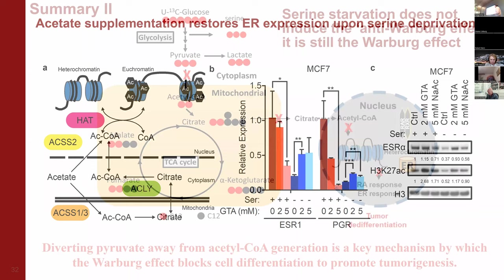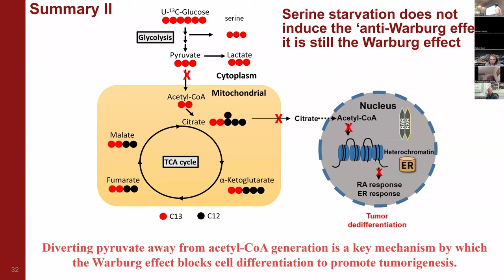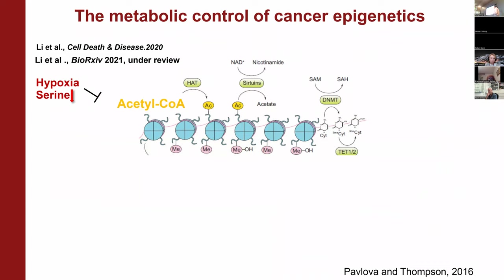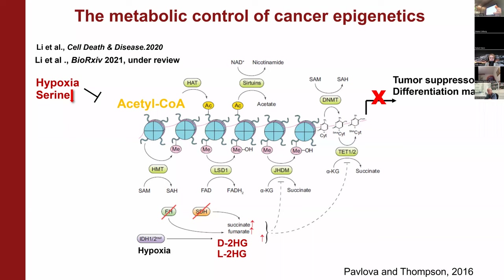To summarize the second part: although under serine starvation the cells generate less lactate, intrinsically it is still the Warburg Effect — still silencing those cell lineage-specific markers by reducing histone acetylation. Similarly to hypoxia, we can restore those differentiation markers by giving cells acetate. In the first part of this talk, I discussed how acute stress conditions such as hypoxia and serine starvation cause tumor cells to reduce pyruvate flux into acetyl-CoA generation, inducing histone hypoacetylation and silencing differentiation markers. But for established tumors, there's another epigenetic modification — DNA methylation — which is more stable, more heritable, and has more long-term effects on cell differentiation. In tumors with mutations such as IDH mutation, fumarate hydratase loss, or succinate dehydrogenase loss, so-called oncometabolites such as 2-HG, fumarate, and succinate accumulate, inhibiting all αKG-dependent demethylases and causing histone and DNA hypermethylation to silence tumor suppressors and differentiation markers.